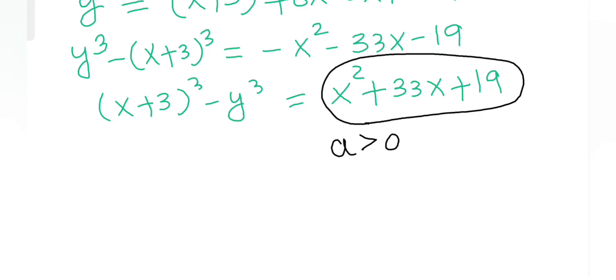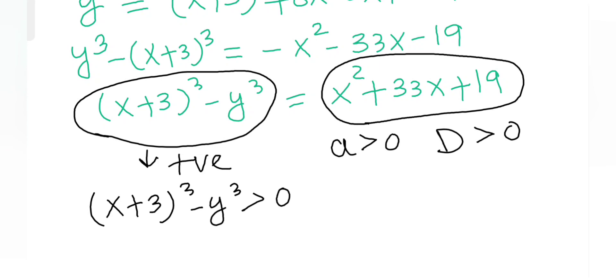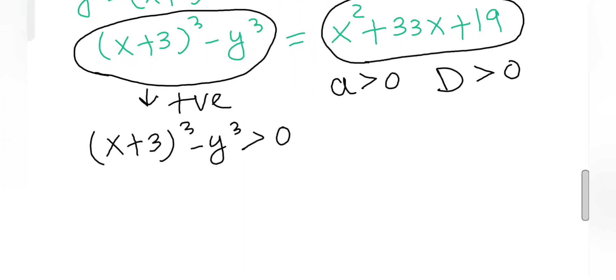And b is also positive, which means this side must be positive. So (x+3)³ minus y³ must be positive, and after simplification, x+3 must be greater than y. Call this equation 2.